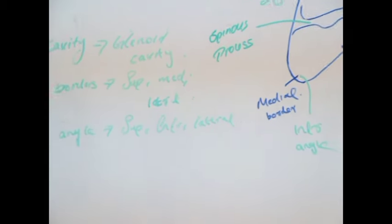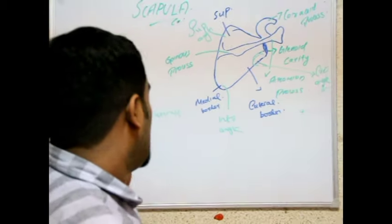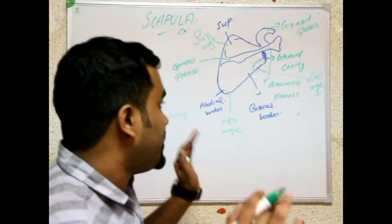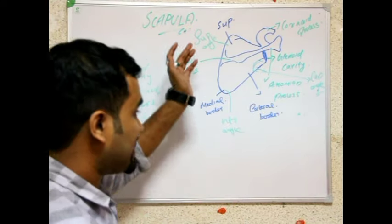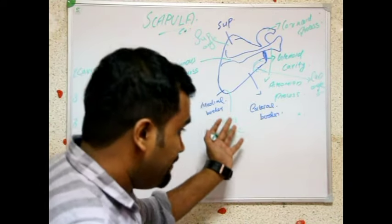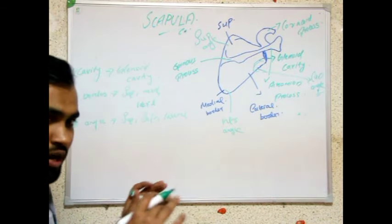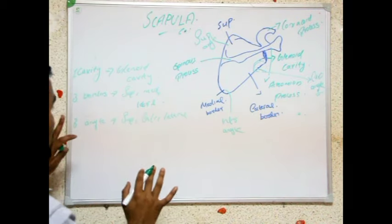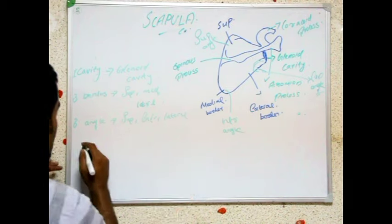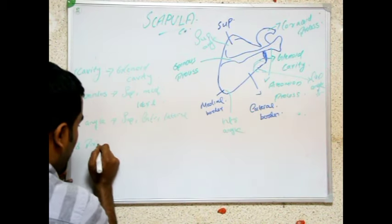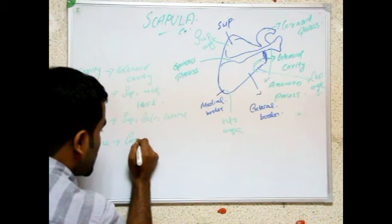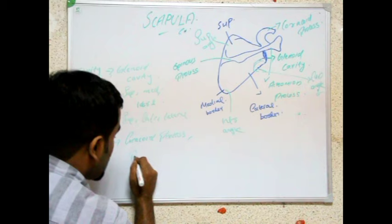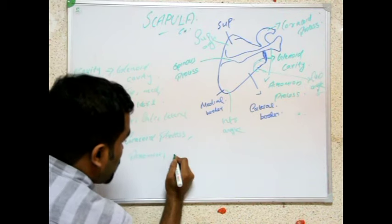We are studying this for the attachment of muscles. From the superior angle of the scapula — we must have an image of where the superior angle is or where the medial border is. The inferior angle of the scapula is important for attachments. So keep in mind: three angles, borders, and three processes — coracoid process, acromion process, and spinous process.